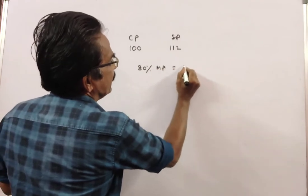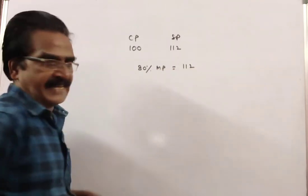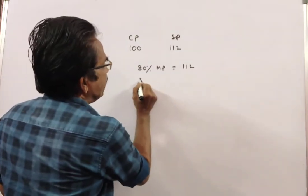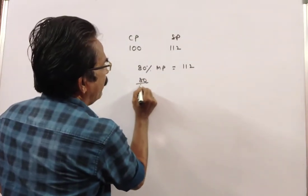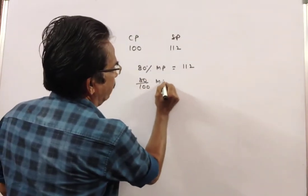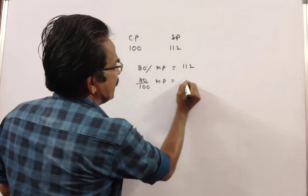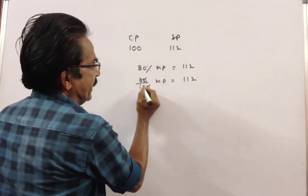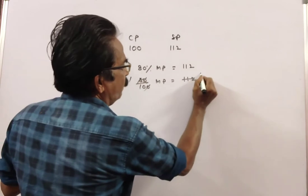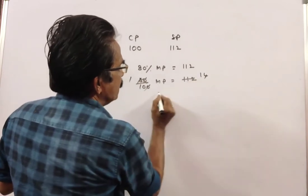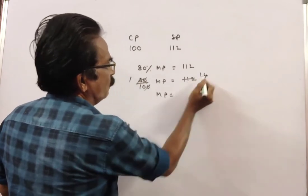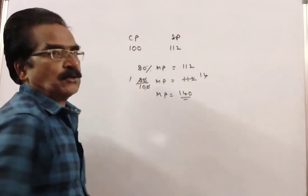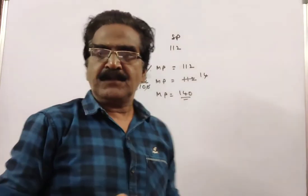80% of the market price is 112. So, 80 divided by 100 into market price is equal to 112. Cancelling the zeros, market price is equal to 14 tens, that is 140. So market price is 140.